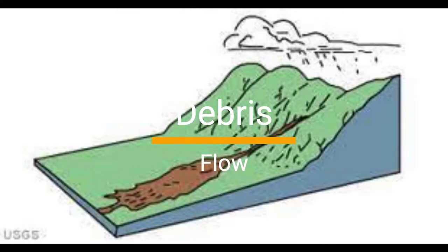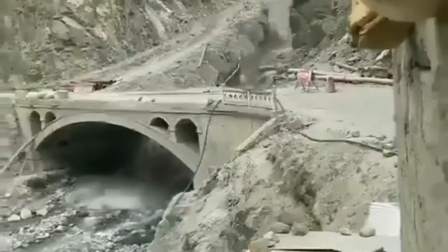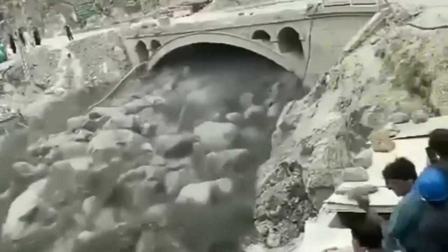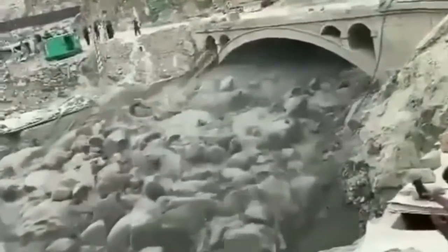Debris flow is a type of landslide that involves a rapid movement of a mixture of soil, rock, and other debris downhill along a channel or drainage way. It is typically triggered by heavy rainfall or snowmelt, and can occur in areas with steep slopes and loose, unconsolidated soils. Debris flows can be particularly dangerous as they can move at high speeds and can carry large boulders and other debris, causing significant damage to infrastructure and posing a serious threat to human life. They can also cause flooding in downstream areas.